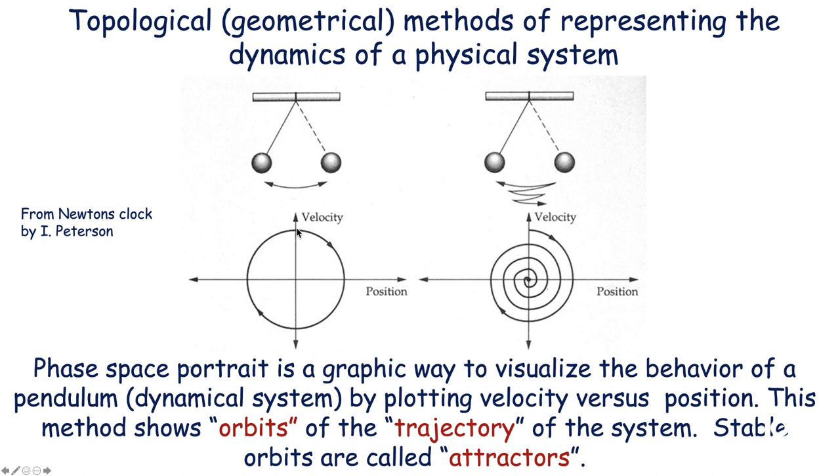If the pendulum in real space slows down because of the friction with air, then this will form a shape that will come to a rest in the very present time. This is called phi-space portraits and allowed a graphical way to visualize the behavior of a pendulum, a dynamic system, by plotting velocity versus position. This method shows a kind of orbits and the trajectory of the system. A stable orbit are called attractors, where indeed is oscillating, in this case stable, or become to a stable quiescence.